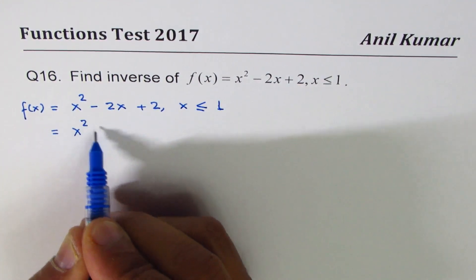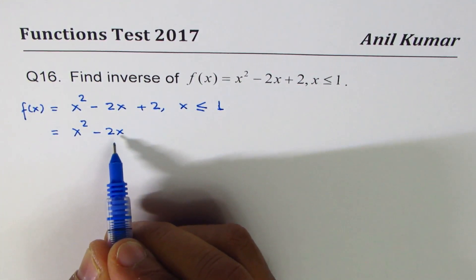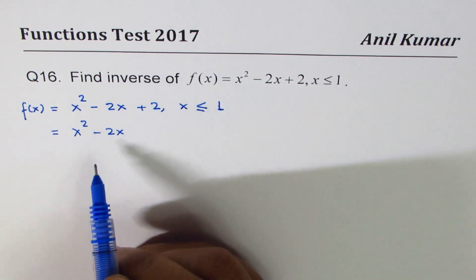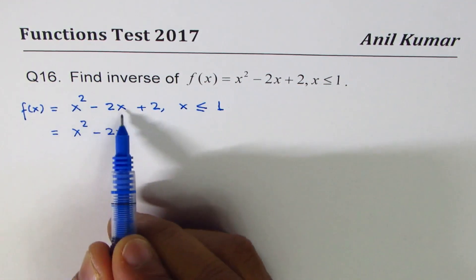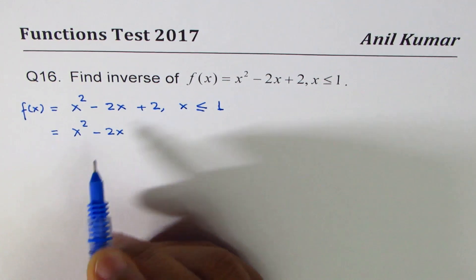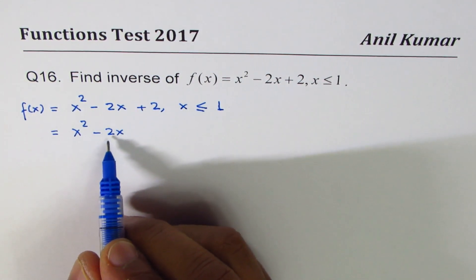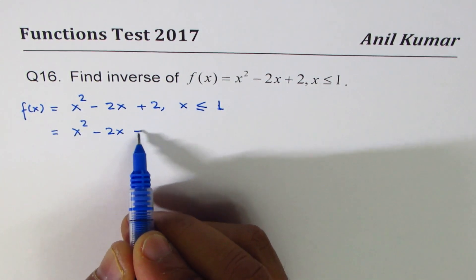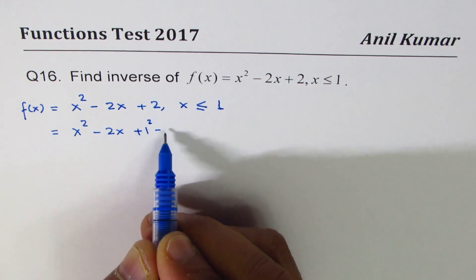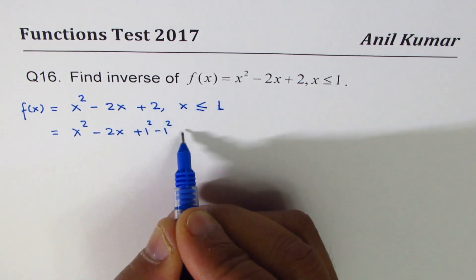We have x² - 2x. If you don't change it to vertex form, you cannot find the inverse since there are two different x terms. Half of 2 is 1, so we will add and subtract 1², and we have +2 here.